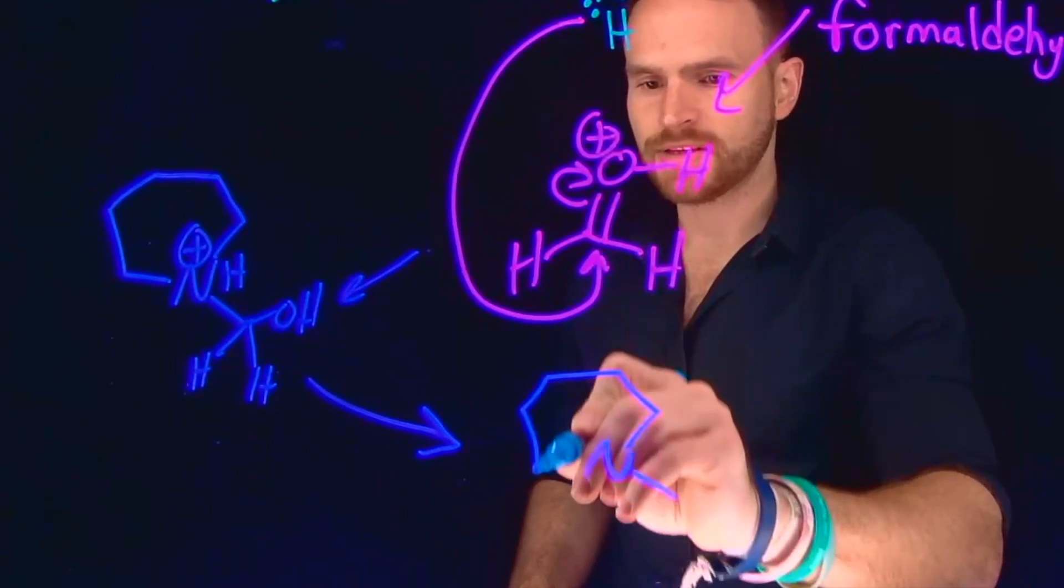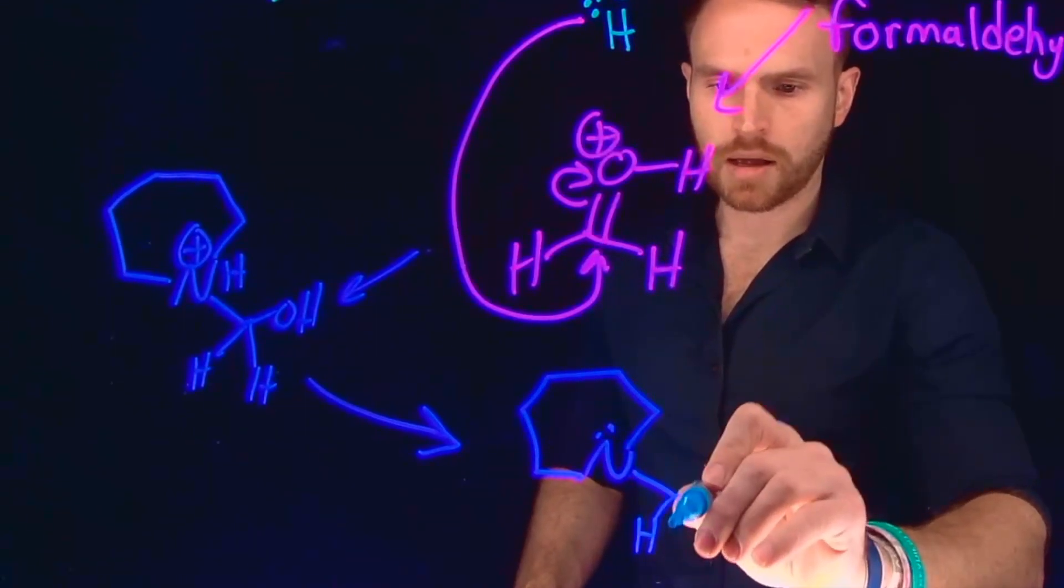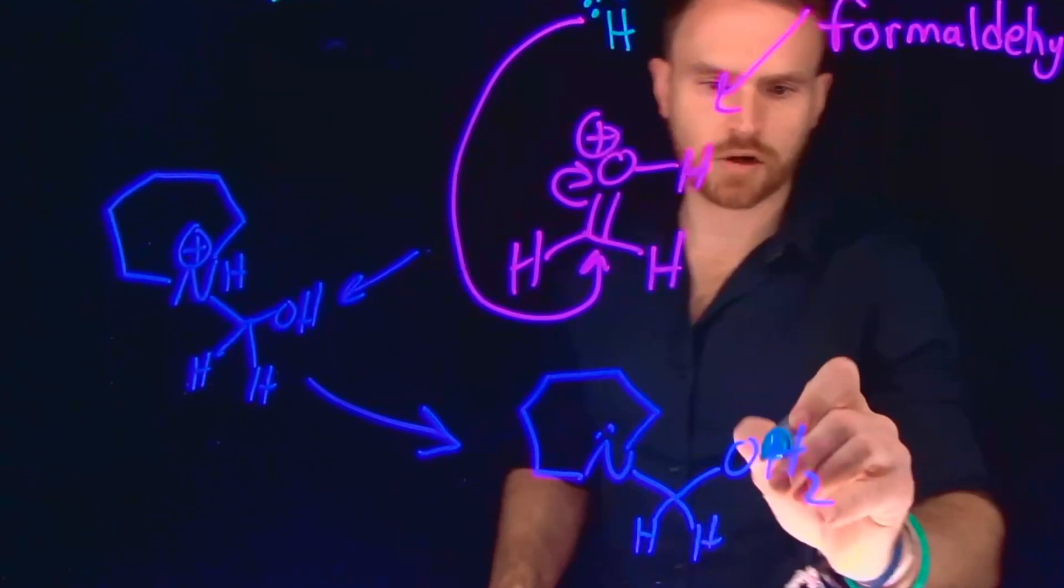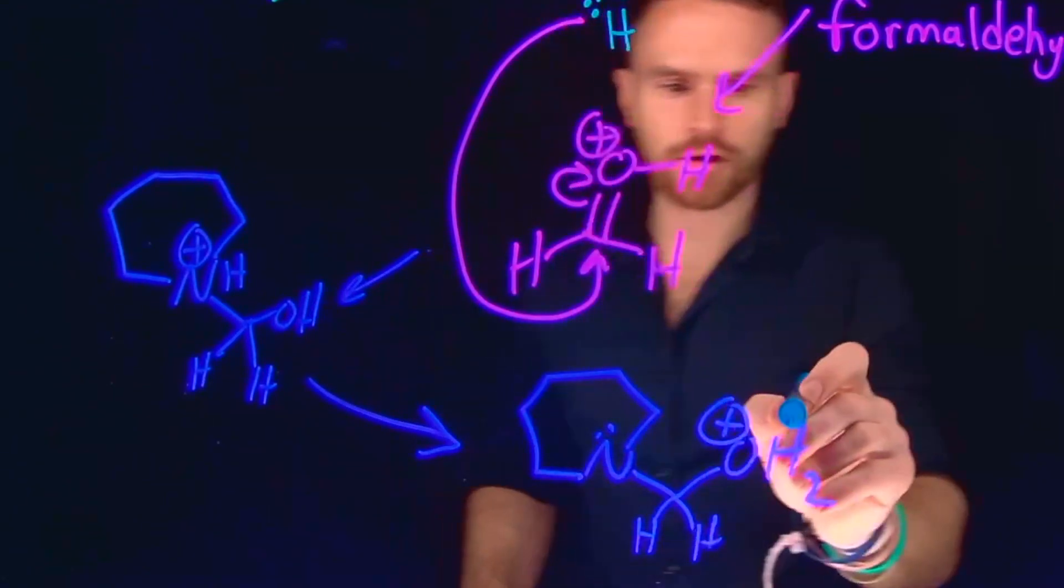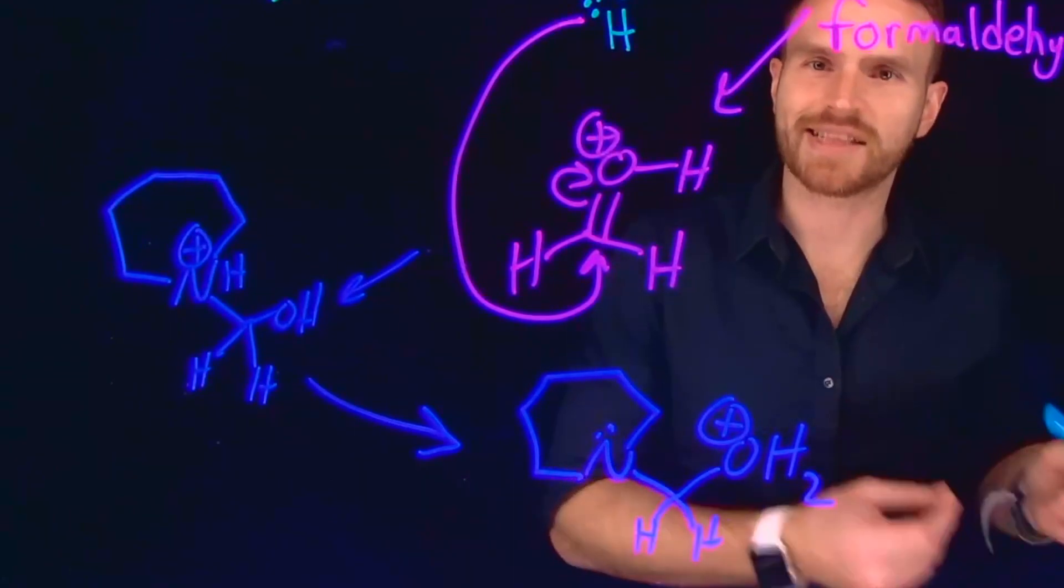And instead, now what we're going to have is a positively charged alcohol, which can be used as a good leaving group. So now that proton transfer that has occurred now that is on this other, what was previously an alcohol, now contains these two hydrogens on it, making it a very good leaving group because it can leave as water.